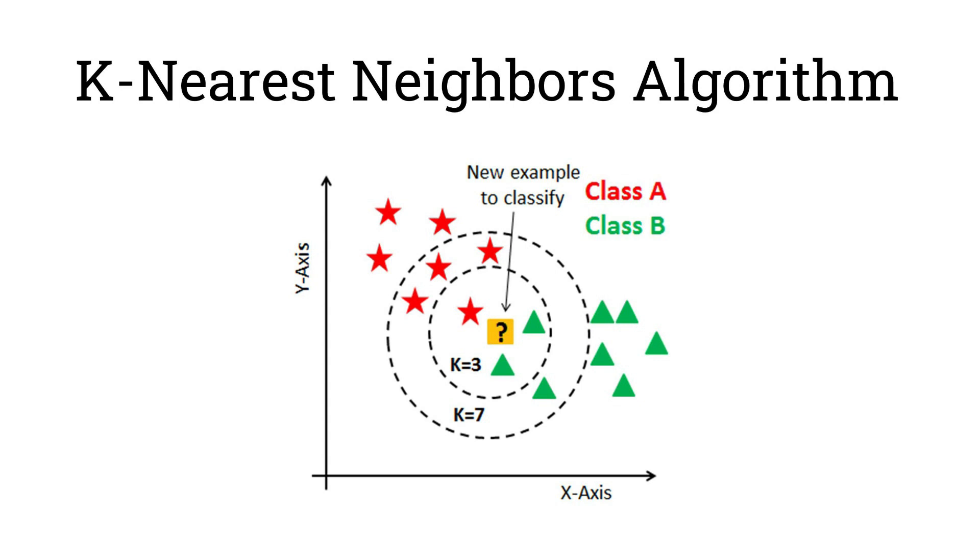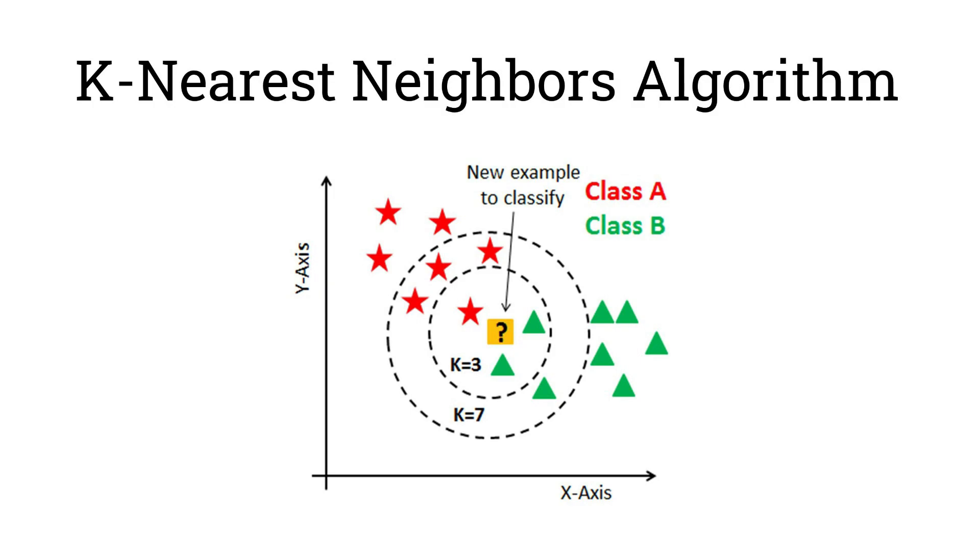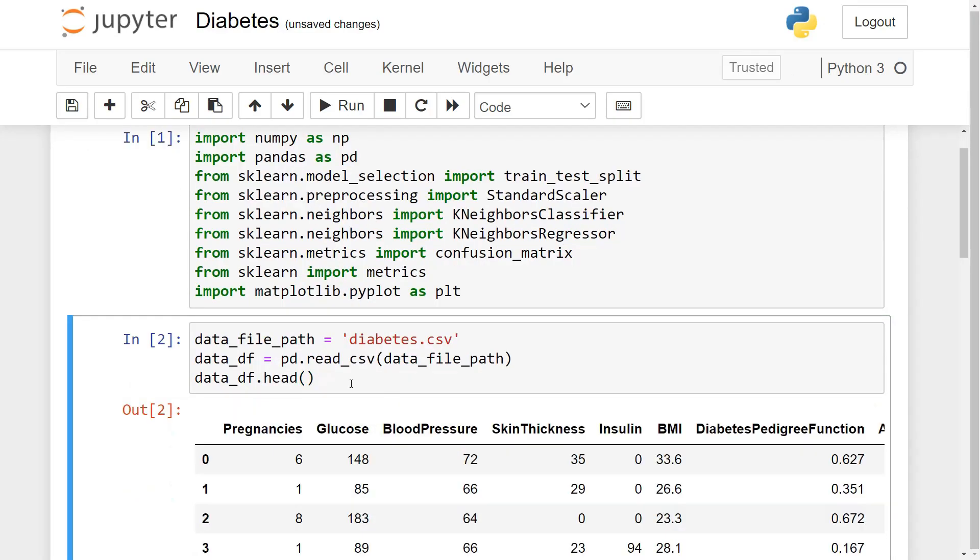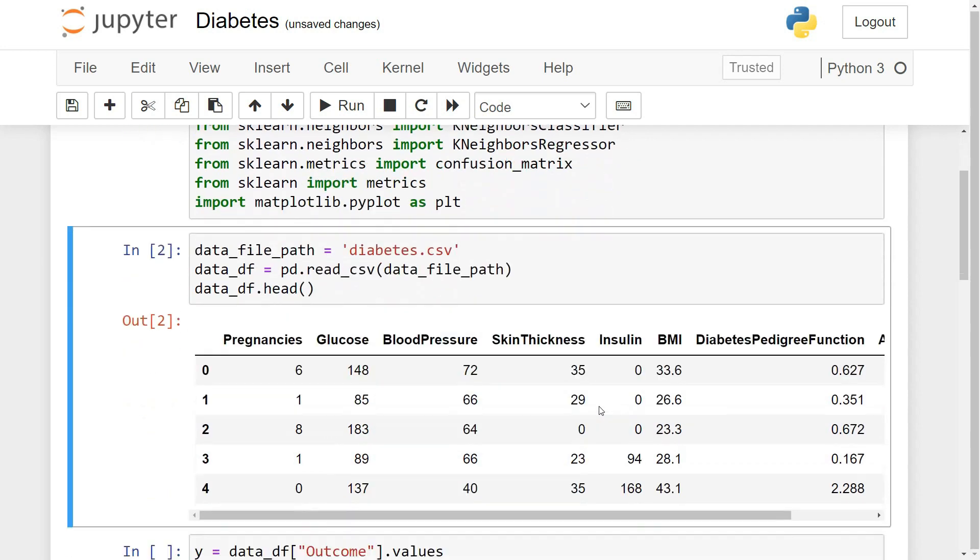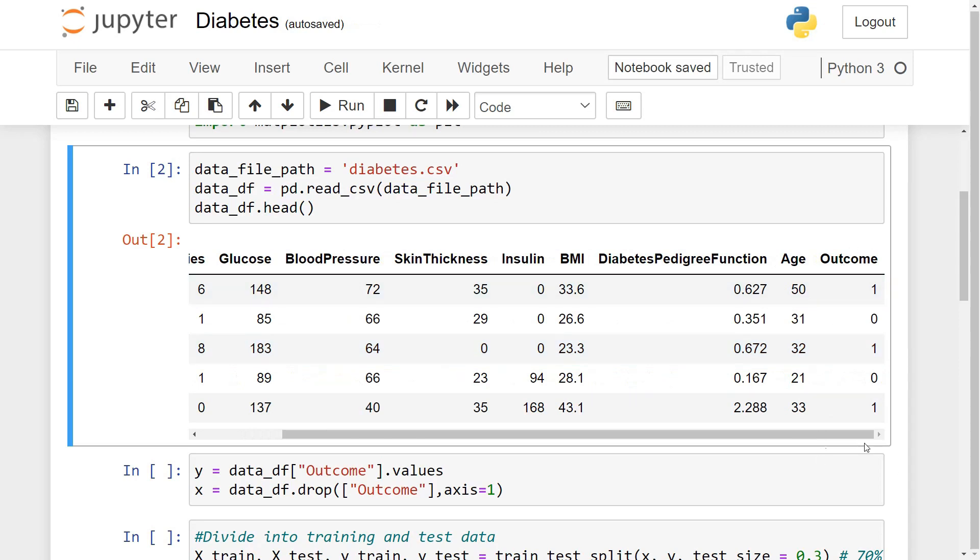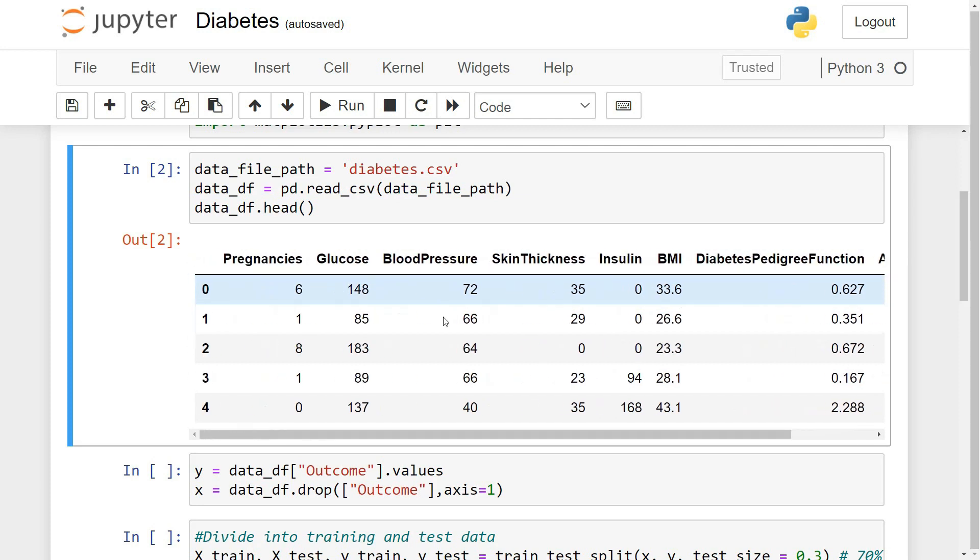Alright so now let's try implementing this example using Jupyter notebook. Our first step would be to import all the required library and packages. Next would be to read the dataset. Alright so basically you can look into this dataset. So we have a column called as outcome which is a binary output. So it will either tell if the person is expected to have diabetes or not based on a number of parameters like their age, their BMI, skin thickness, blood pressure and various other parameters.